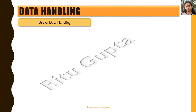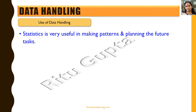Now why do we want to collect data and then organize and arrange it systematically? What is the use of data handling? Statistics is a science of organizing and analyzing data, and that branch is very useful in making patterns and planning future tasks.